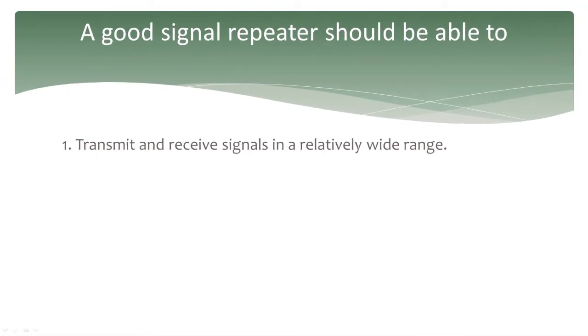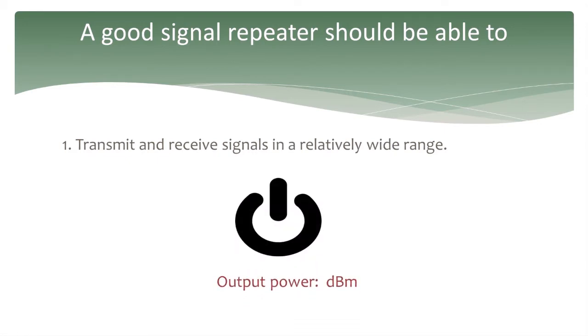A good signal repeater should be able to: one, transmit and receive signals in a relatively wide range. This spec is defined by the output power of the repeater.